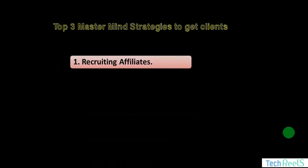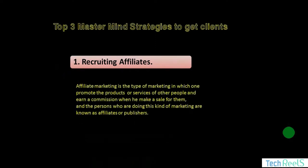The first strategy to get clients for free is to recruit affiliates. Affiliate marketing is the type of marketing in which one promotes the products or services of other people and earns a commission when they make a sale. The persons who do this kind of marketing are known as affiliates or publishers. Recruiting affiliates means you will recruit bloggers and YouTubers on your website as affiliates, and they will promote your services — you pay them a commission only when they bring you a sale.